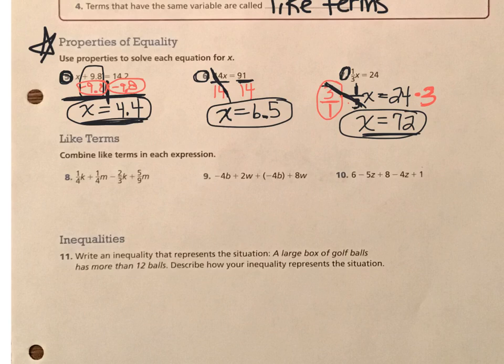Okay. So the next part that I'd like for you to take a look at is the part about like terms. Like terms can be combined if they have the same variable. You cannot put terms together unless they have the same variable attached to the number in the front, which is called the coefficient.